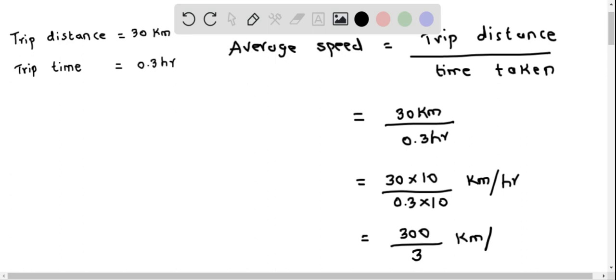So we can now do the division. That is 300 divided by 3 is 100. So therefore the average speed equals 100 kilometers per hour.